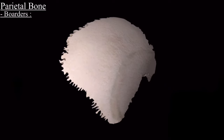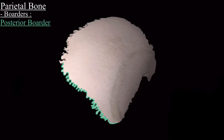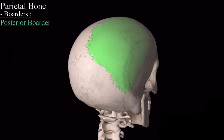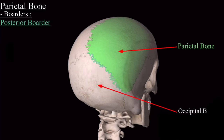The last border is the posterior border, extending from the posterior superior angle to the posterior inferior angle. In the complete skull model, through this posterior border the parietal bone is attached to the occipital bone, and together they form the lambdoid suture.